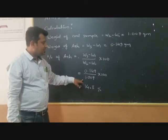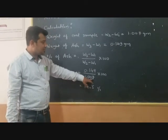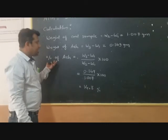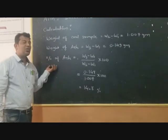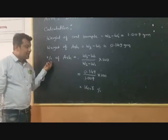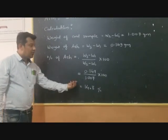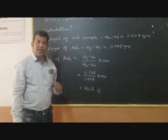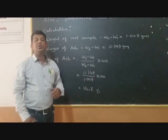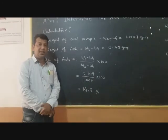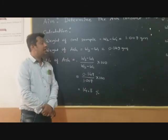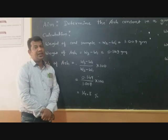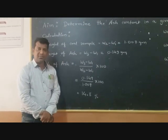Our coal sample is 1.007 grams. It means in our coal sample there is 14.8 percent ash. So by this way, you can easily determine the ash content of any coal sample.